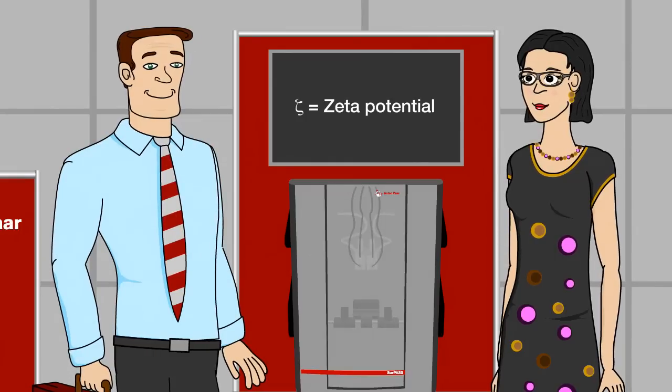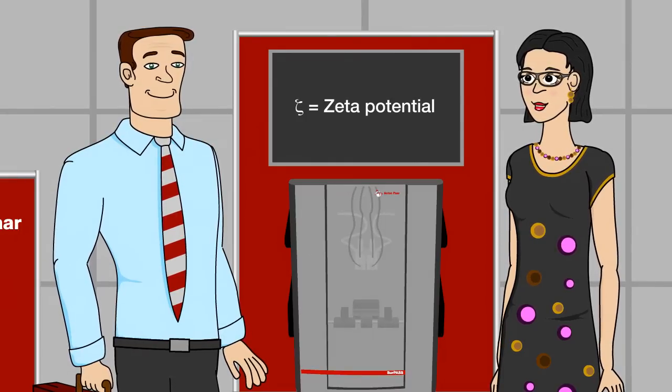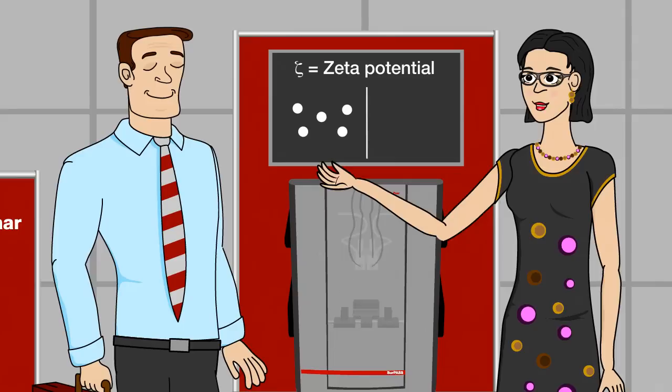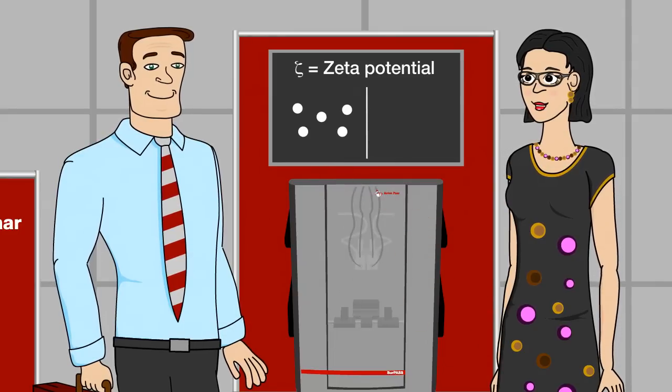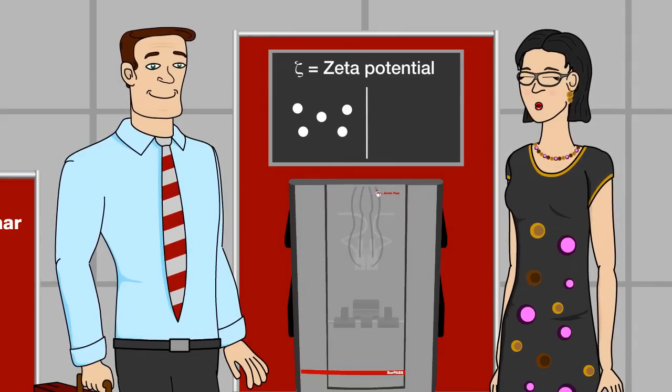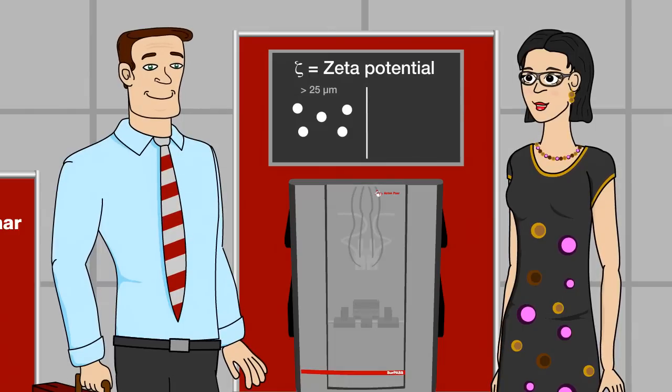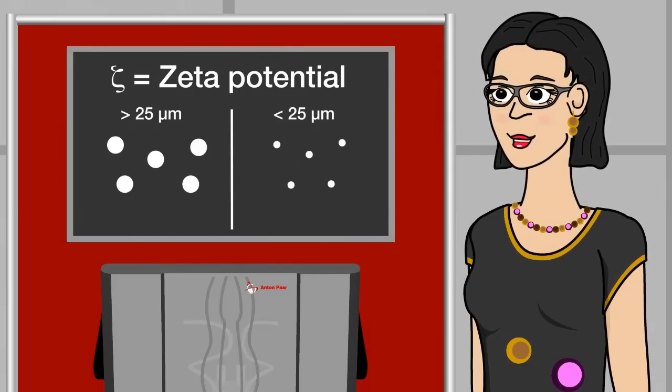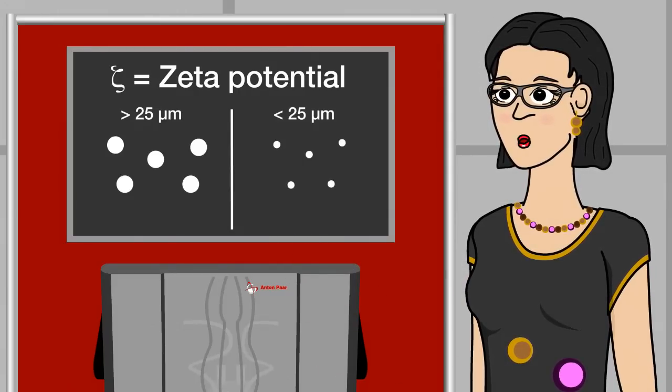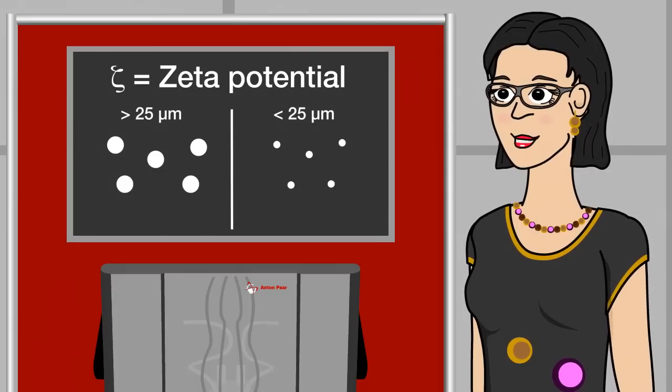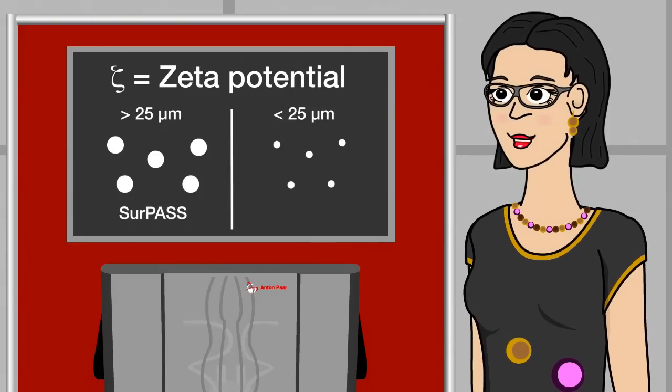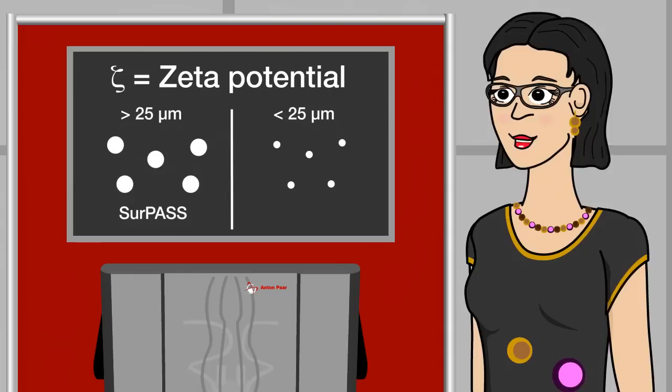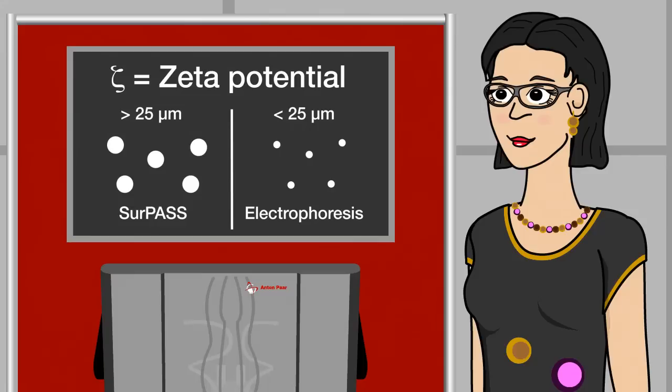Exactly. Oh, but let's be precise so that there is no misunderstanding. Imagine two different groups of samples. Here we have macroscopic solids of any shape, like plates, foils, fibers, granulates or powders with particles larger than 25 micrometers. And here we have particles which are smaller than 25 micrometers. If you want to analyze the zeta potential of macroscopic solids, you use SURPASS. If you want to analyze the zeta potential of smaller particles, you use an entirely different method, electrophoresis.